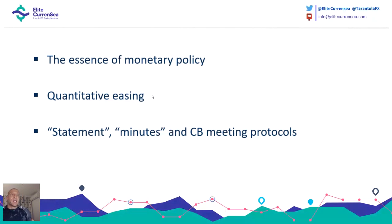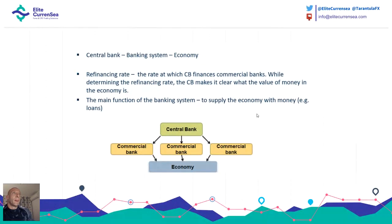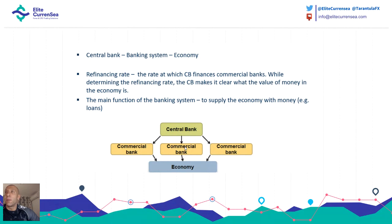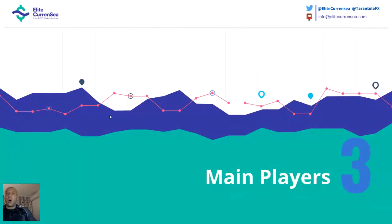There are different statements, minutes, and central bank meeting protocols that happen after the announcement of a cash rate. When that happens, prices can get very volatile and move very fast. The refinancing rate is the rate at which a central bank finances commercial banks. By determining the refinancing rate, the central bank makes clear what the value of money in the economy is. The main function of the banking system is to supply the economy with money — loans.